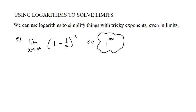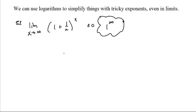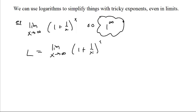How fast is it going to one? How fast is it going to infinity? Because it's never actually going to be one — it's always going to be a little bit more than one. What we do is we say: let L be the limit as x goes to infinity of one plus one over x to the x power.